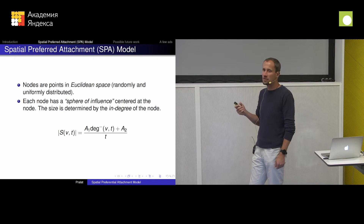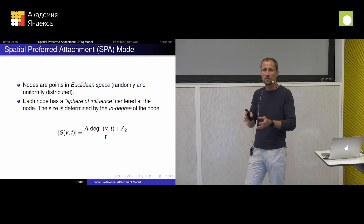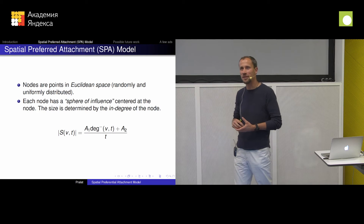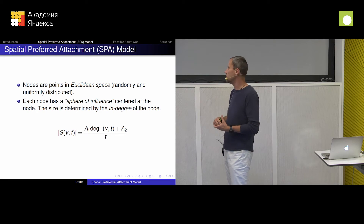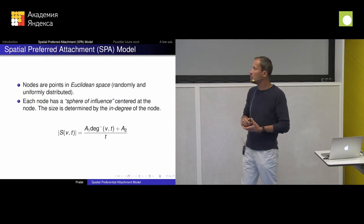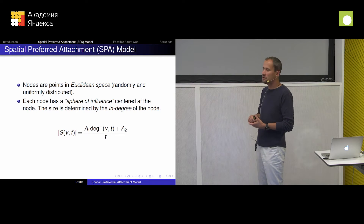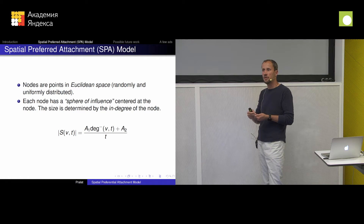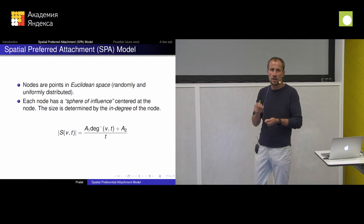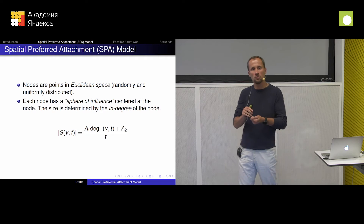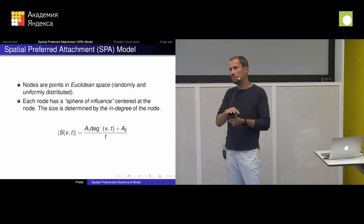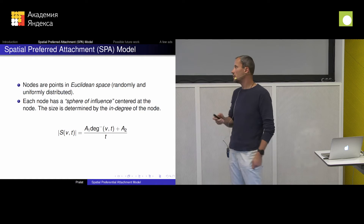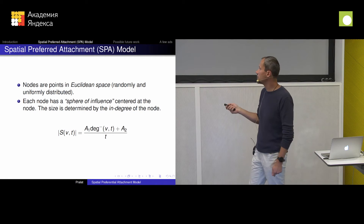I think it's always good to think about some application, although it might be kind of silly. So maybe let's think about trying to model the citation graph. My nodes will be papers, and each node will be citing some papers.